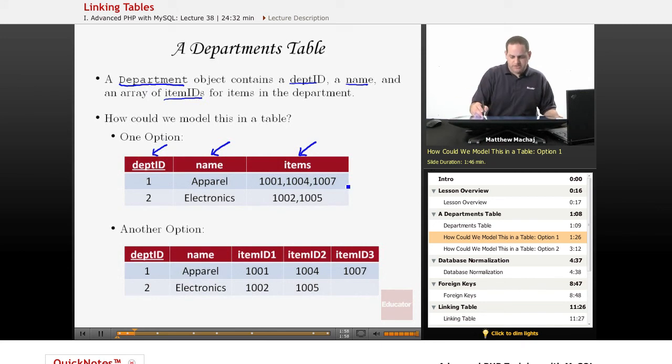In this case, as has been the case in our departments.txt file, we've been basically storing all of the item information in a comma delimited list that basically shows all of the items in the particular department. So we could simply just move that comma delimited string into this items column of our department table. So here would be a department with three items, and here would be a department with two items, for example.